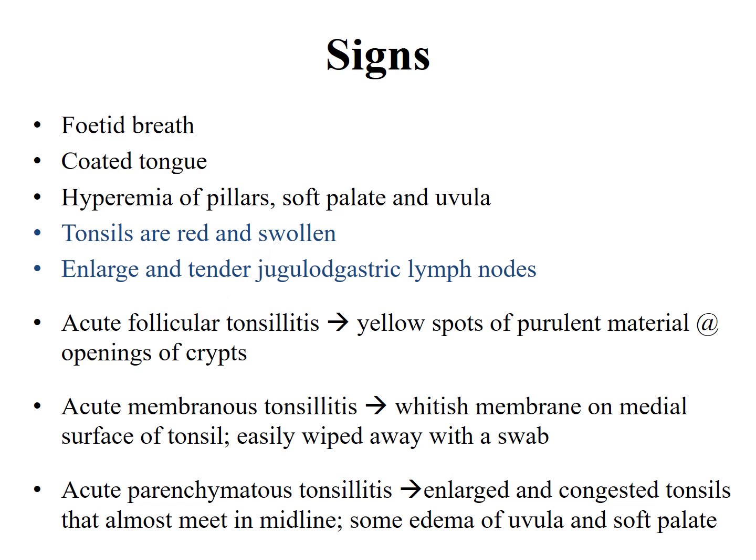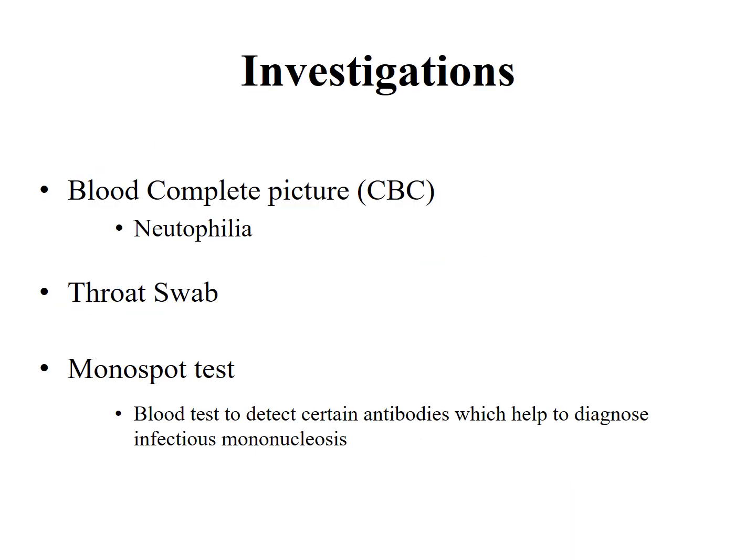In acute follicular tonsillitis, yellow spots of purulent material are visible at the opening of the crypts. In membranous tonsillitis, a whitish membrane is seen on the medial surface of the tonsils and can be easily wiped away with a swab. In acute parenchymatous tonsillitis, both tonsils are enlarged and congested and may meet in the midline with some edema of the uvula and soft palate.